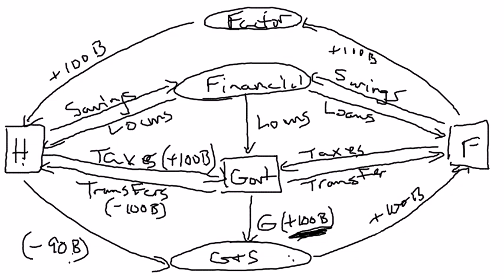So the increase in government spending will increase spending in the economy, but not nearly as much as you might initially think. Where else can the government get the money if it doesn't want to cut transfer payments or raise taxes? It could get it from loans — plus $100 billion worth of loans from financial markets. That's nice because household disposable income doesn't fall, so you won't get the decrease in consumption expenditures. The government gets loans from the financial sector, spends, and that results in an extra $100 billion of revenue and ultimately $100 billion of income. But that itself is missing something, because the financial sector has to get the money from somewhere.